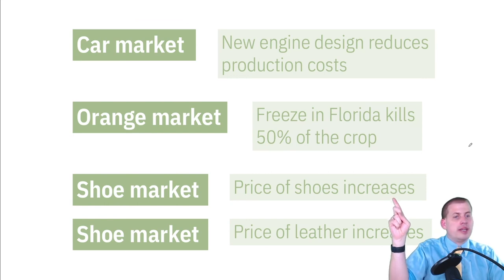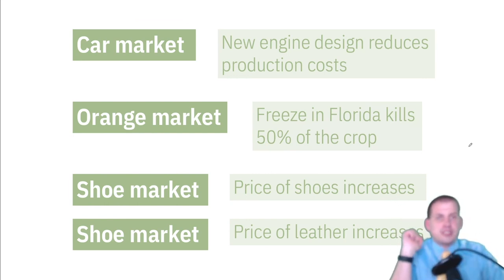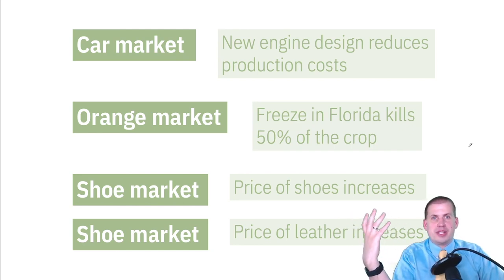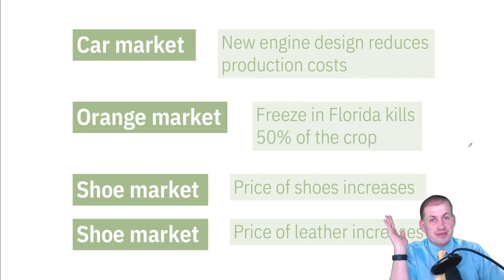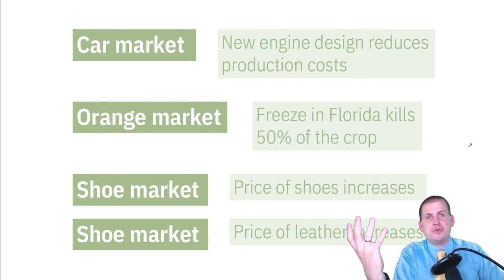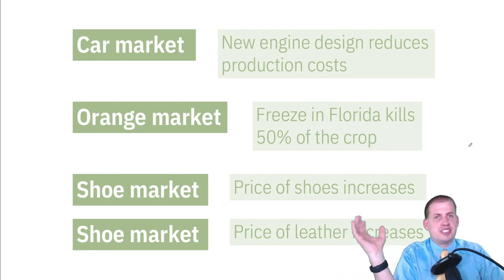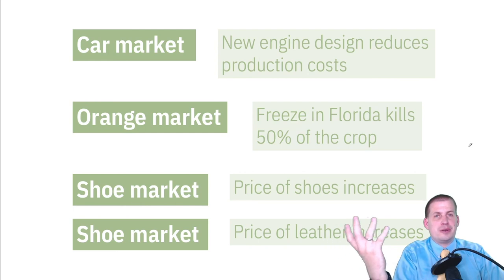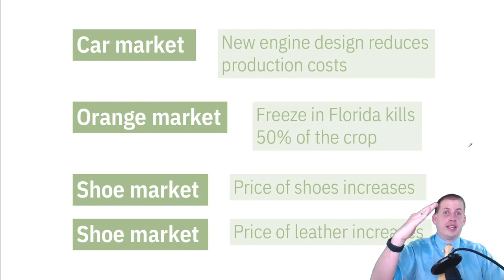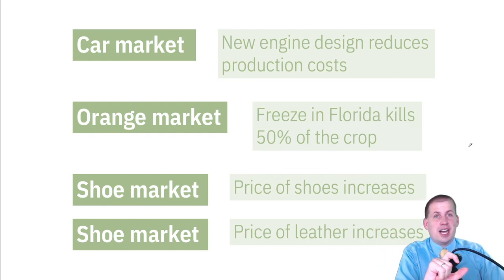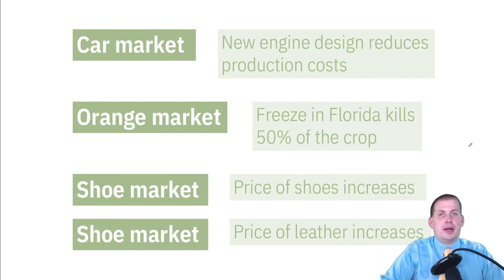That's the key distinction between change in quantity supplied and change in supply itself. In econ textbooks and undergrad classes, you get problem sets asking you to identify which type of change something is. The main takeaway is: when there are structural changes, that's a change in overall demand or overall supply. If there are just changes in prices, you're moving along the existing line — not a structural change.